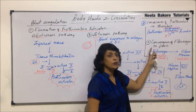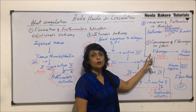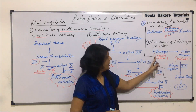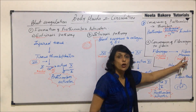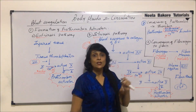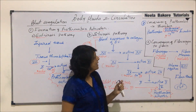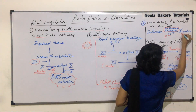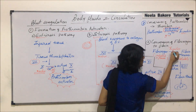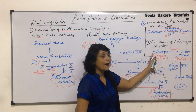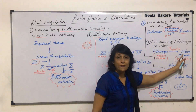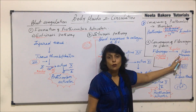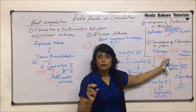Step 3 is the conversion of fibrinogen to fibrin. Fibrinogen is a protein which is soluble in plasma. This soluble protein gets converted into insoluble fibrin with the help of thrombin. The thrombin produced in step 2 is required for the conversion of fibrinogen into fibrin — from a soluble protein to an insoluble one. First, monomers are formed, known as monounits.